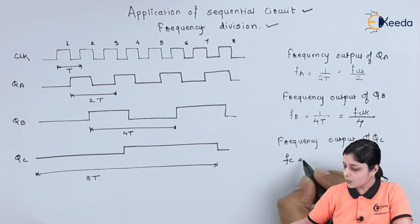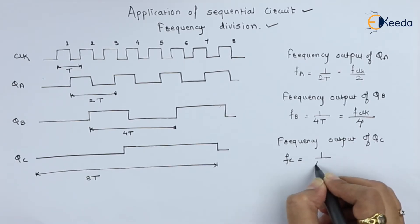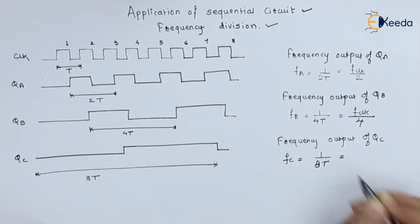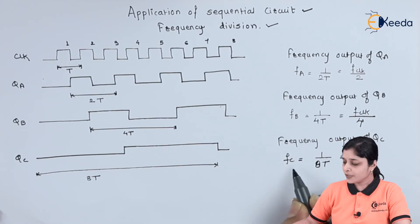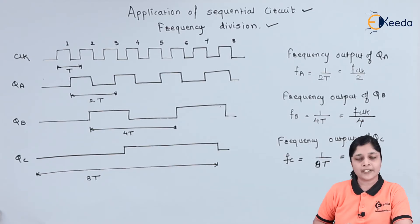Now if you see here, one cycle period having time of 8T. So frequency for output C of flip-flop is 1 upon 8T. The frequency of the final flip-flop, that is C and its output is QC, is given by 1 upon 8T.